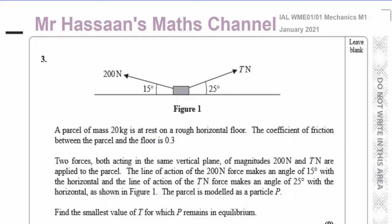This is about a parcel of mass 20 kilograms which is at rest on a rough horizontal floor, and the coefficient of friction between the parcel and the floor is 0.3. Two forces, both acting in the same vertical plane, of magnitudes 200 newtons and T newtons are applied to the parcel. The line of action of the 200 newtons force is 15 degrees to the horizontal, and the line of action of the T newtons force makes an angle of 25 degrees to the horizontal as shown in figure one. The parcel is modelled as a particle.